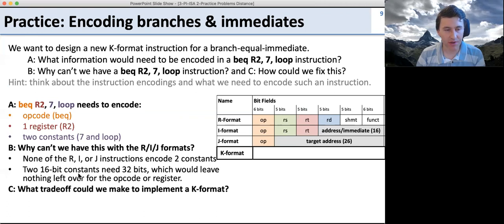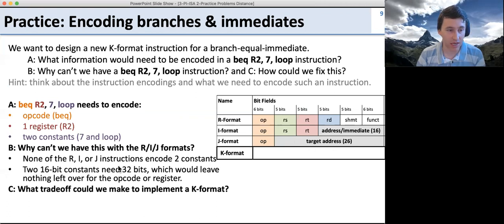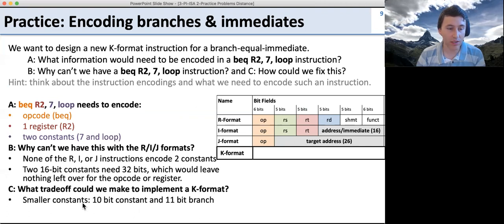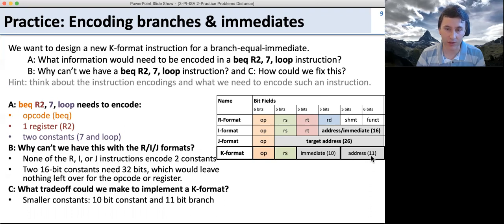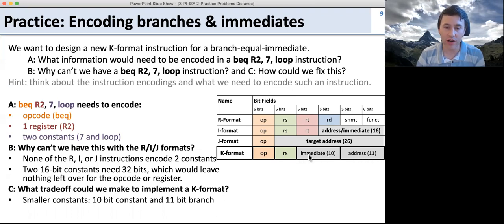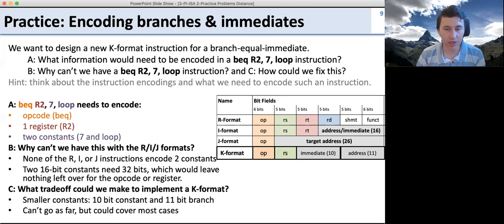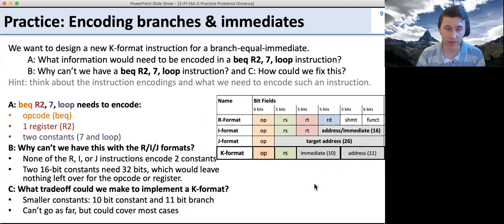We'll have to make some trade-offs — specifically, smaller constants. With one register and one op code, we have 21 bits of remaining space available. We have to divide that between the immediate for comparison and the branch address. We can trade off how large each constant is, depending on how large an immediate we want to compare and how far we want to branch. In this example, the branch address is only 11 bits versus the I-format's 16 bits. So we can't branch as far, but we gain the ability to have a built-in immediate for comparison.